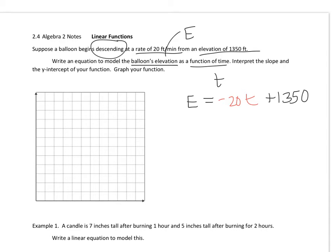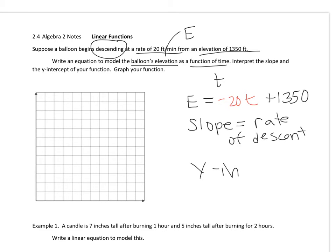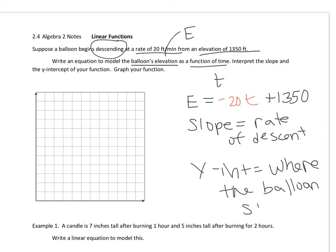So the slope is the rate of descent, negative 20. And the y-intercept is where the balloon starts, or the initial height of the balloon — I actually prefer 'initial height' as the interpretation.